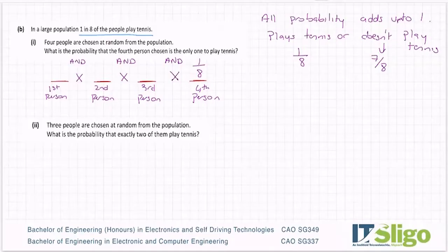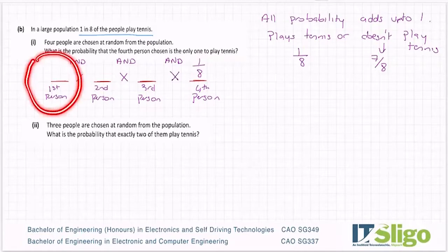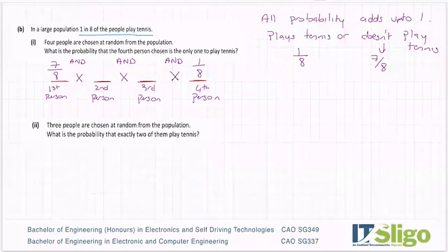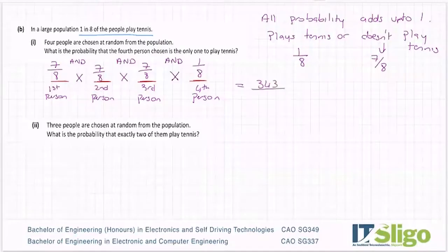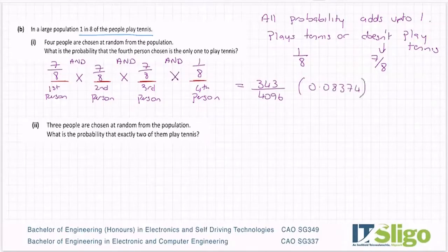Four people are chosen at random — there are my four people. The fourth person is the only one to play tennis, so persons one, two, and three don't play tennis: that's seven-eighths each. Person four does play tennis: that's one-eighth. Put that into your calculator: seven-eighths multiplied by seven-eighths multiplied by seven-eighths multiplied by one-eighth. The probability is 343 over 4096. It's perfectly fine and normal to leave it as a fraction, though you can express it as a decimal or percentage if you want.